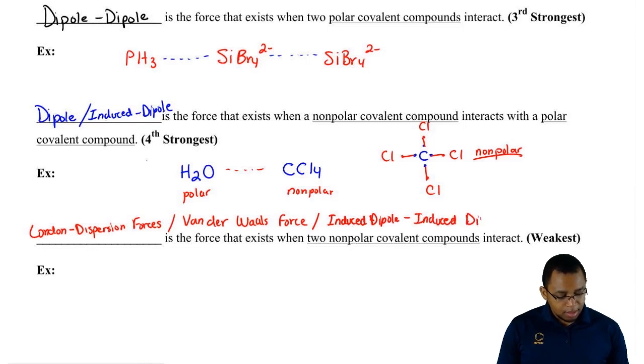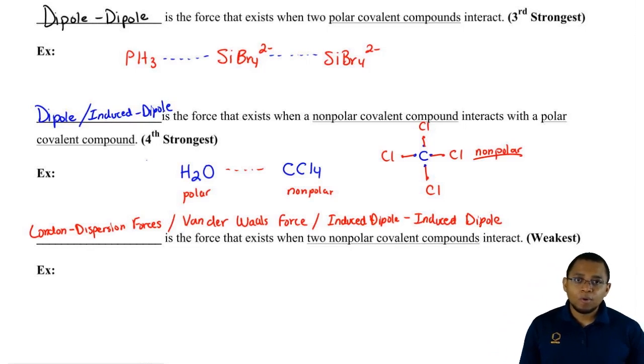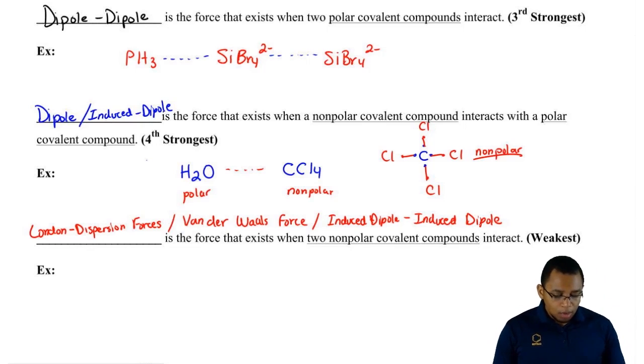Just remember, this last force can be called any one of these three. The main name for it is London Dispersion, but it can also be called one of the other two. This force exists anytime we have non-polar compounds. We could have CCl4 interacting with CH4.